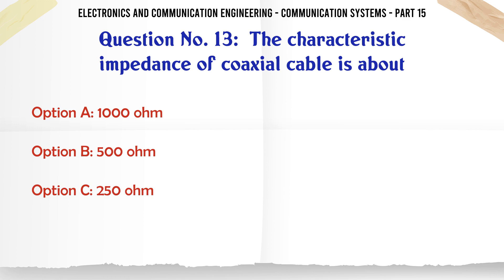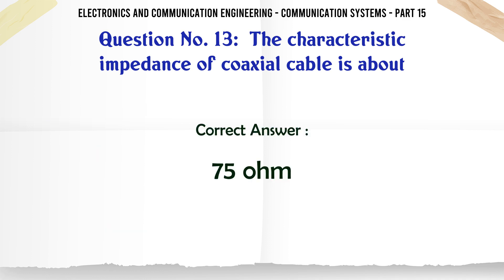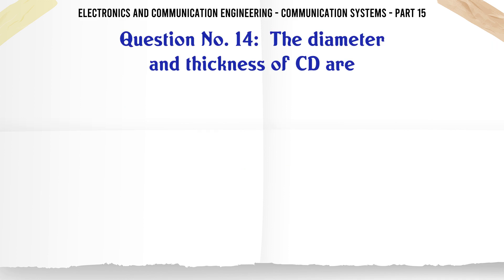The characteristic impedance of coaxial cable is about: a 1000 Ohm, b 500 Ohm, c 250 Ohm, d 75 Ohm. The correct answer is 75 Ohm.